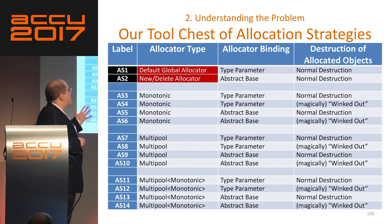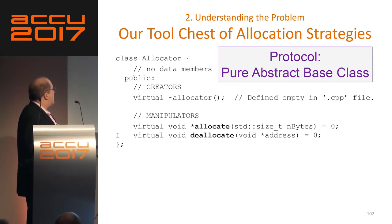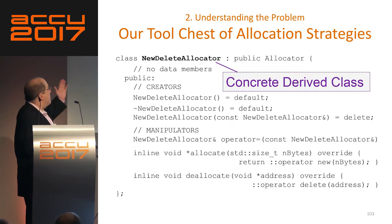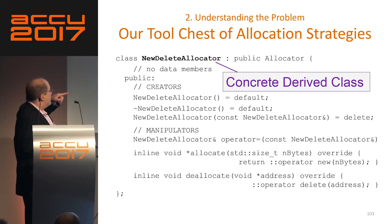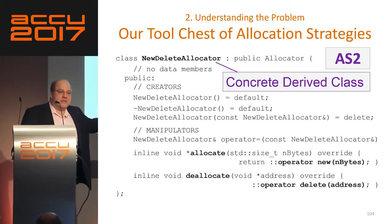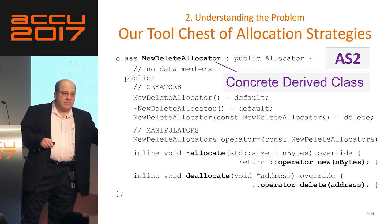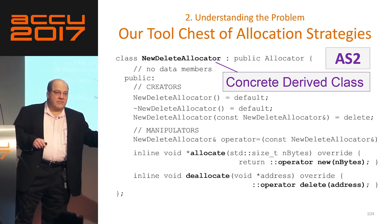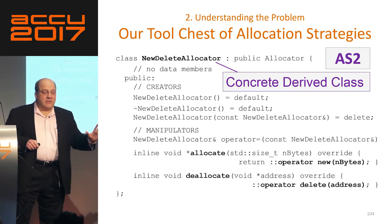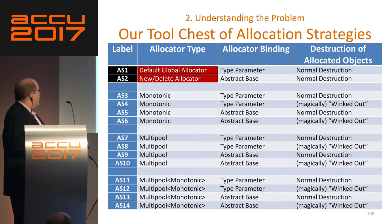Now let's look at AS2. AS2 is the same thing, but now we're going to deal with it as a protocol. This is the abstract base class — it has allocate and deallocate, pure abstract. Then we have the new-delete allocator, which is a kind of allocator — notice the upper-case A. It has allocate and deallocate and overrides the base class. This is allocation strategy two.